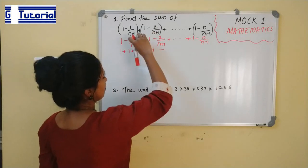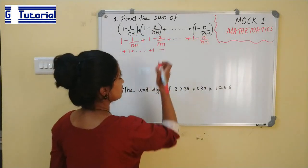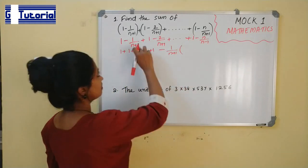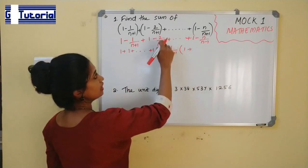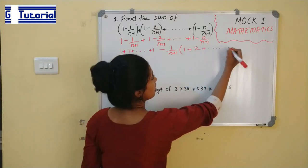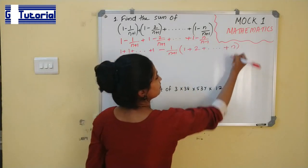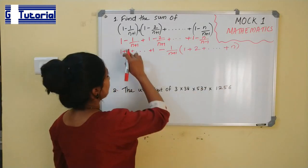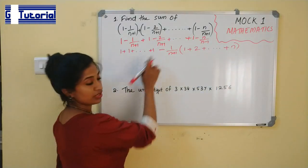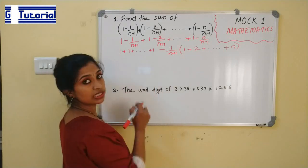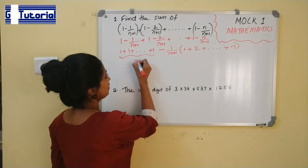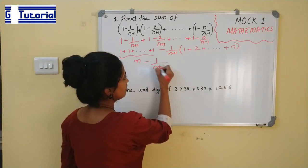1/(n+1) is present in each of these terms. So let us take minus 1/(n+1) as common. The remaining terms inside are 1, 2, and so on up to n. We can see that this series exists up to n, so there are n ones. The sum of n ones is n. So we have n minus 1/(n+1) into (1 + 2 + 3 + ... + n).